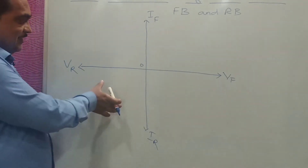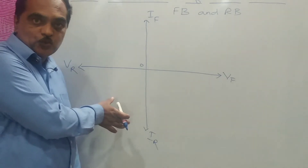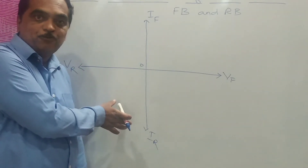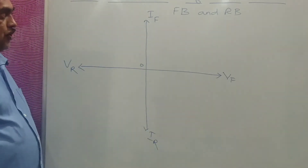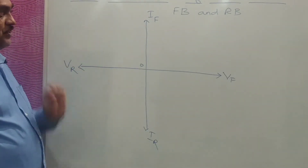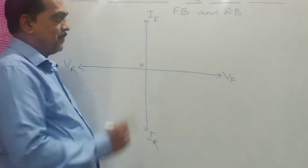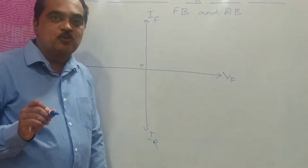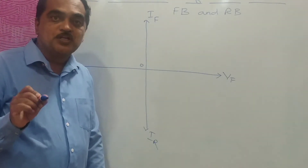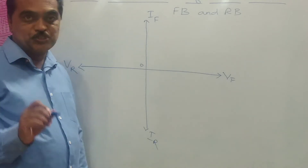Because in that case, the voltage applied will be negative and the current flowing also will be negative. Now in case of Zener diode, the forward bias is the same as your conventional or ordinary PN junction diode.